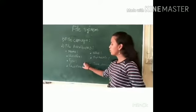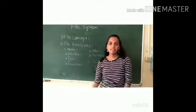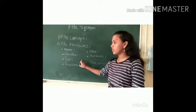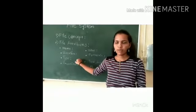The third attribute is type. A file supports different types. For example, a text file.